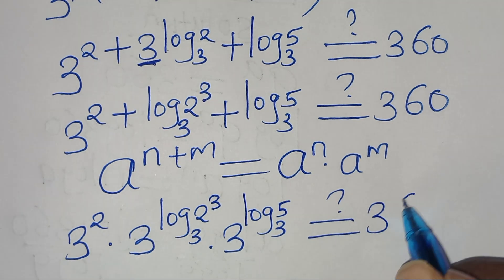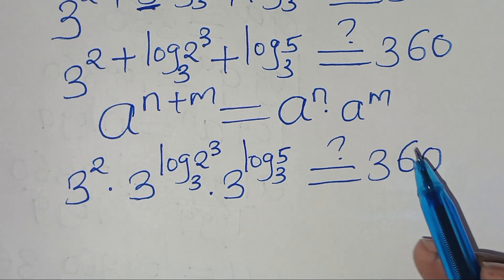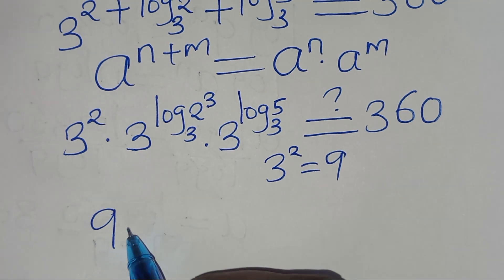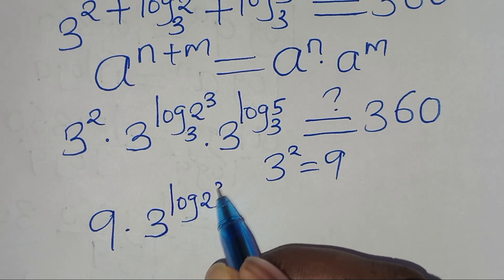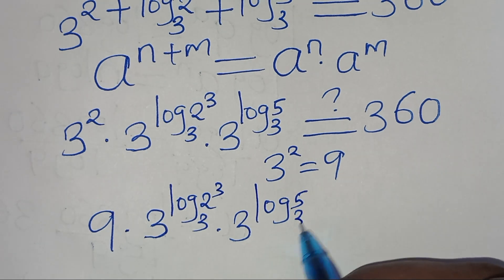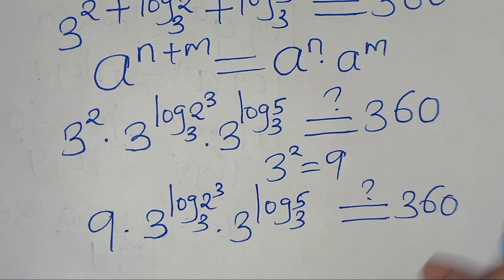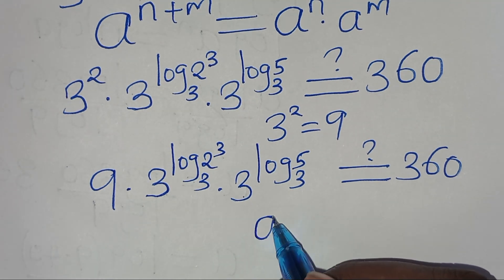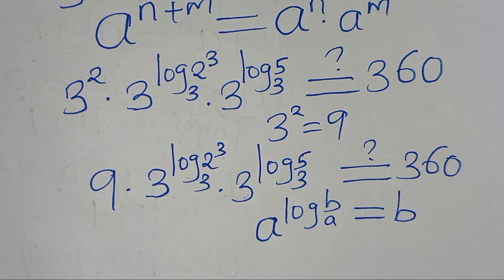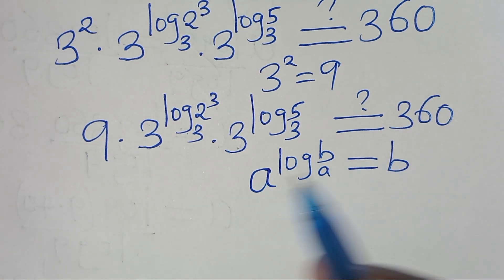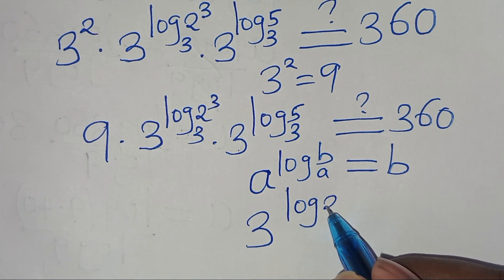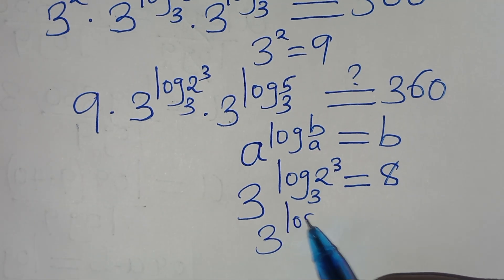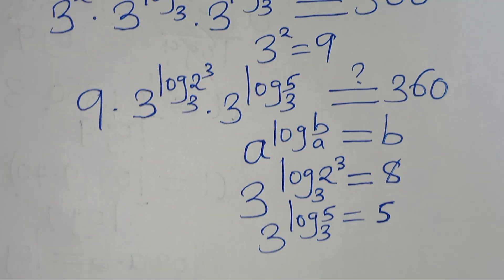The next step: 3 squared is equal to 9. So we have 9 multiplied by 3 to the power of log base 3 of (2³), times 3 to the power of log base 3 of 5. This should give us 360. Now 3 to the power of log base 3 of (2³) equals 2³ equals 8, and 3 to the power of log base 3 of 5 equals 5.